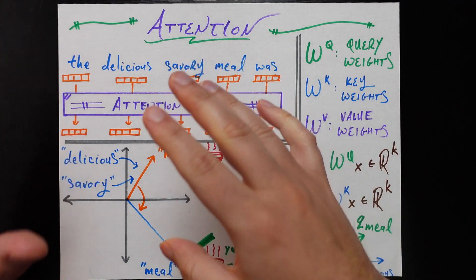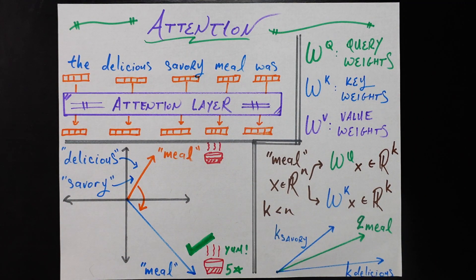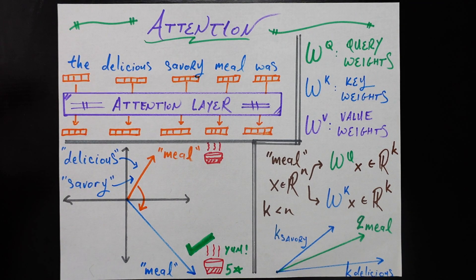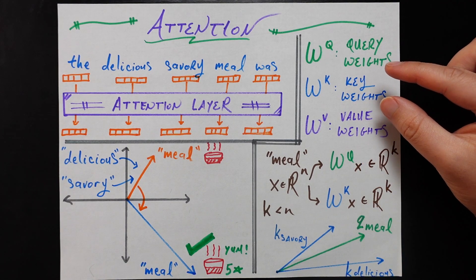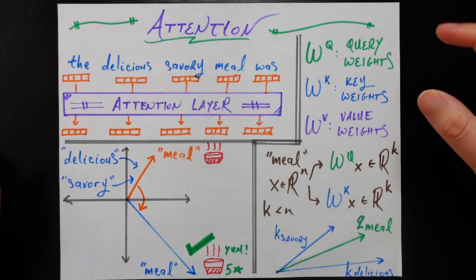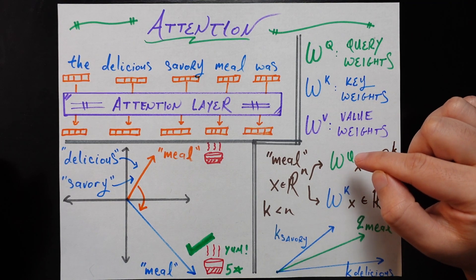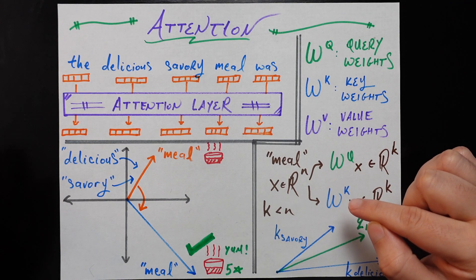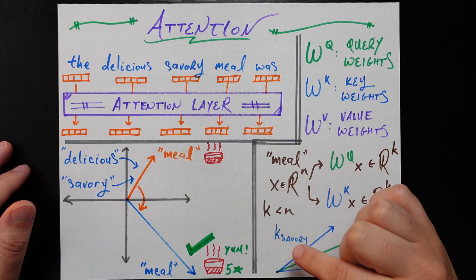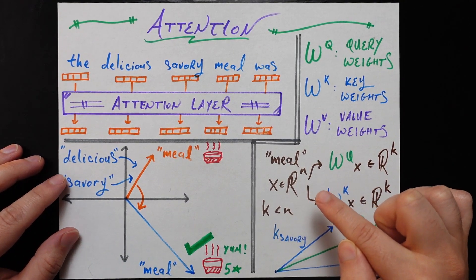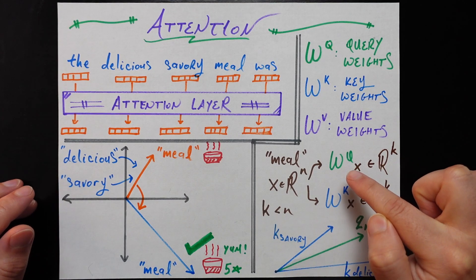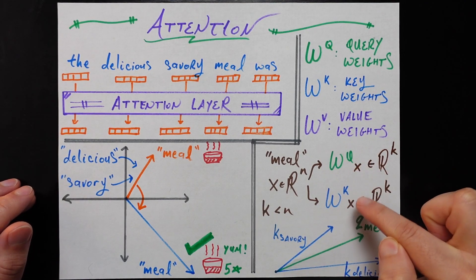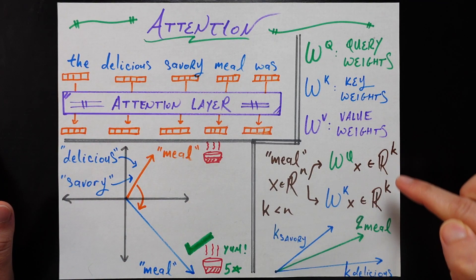Now we've got this done conceptually and visually, let's drill down into the math and see how an attention layer actually makes this happen. The answer, in high-level terms, is through the power of three matrices. One is called the query weights matrix, one is called the key weights matrix, and one is called the value weights matrix. Both the query weights matrix and the key weights matrix project the embedding for each word — here I'm calling that x — which lives in some n-dimensional space, into a lower dimensional space, here I'm calling that r^k, where k is less than n.